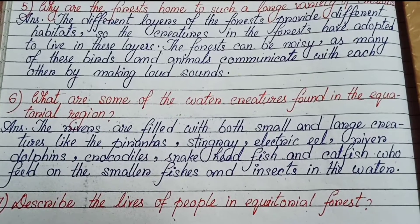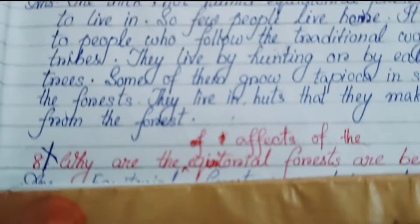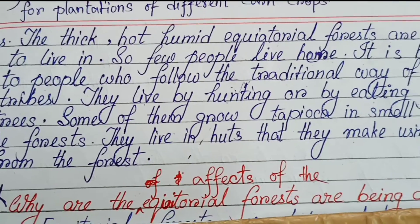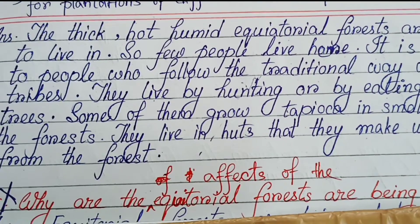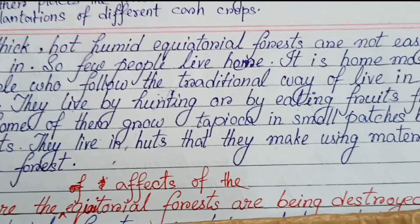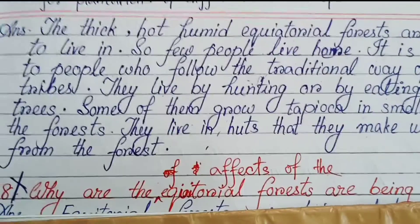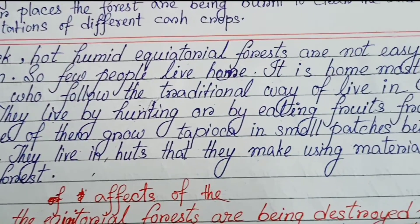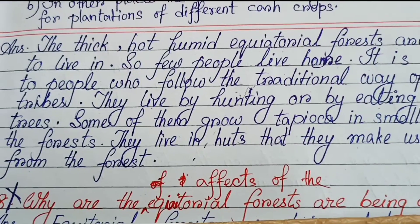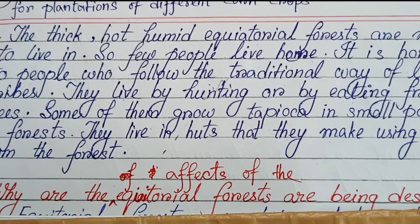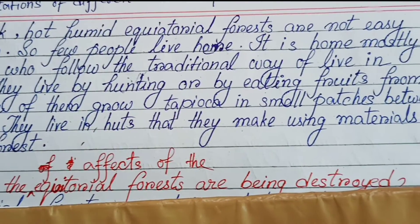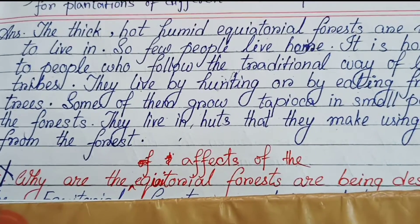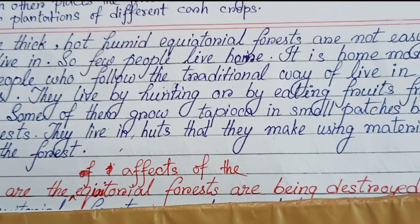Number 7: Describe the lives of people in equatorial forests. The thick, hot, humid equatorial forests are not easy to live in, so few people live here. It is home mostly to people who follow the traditional way of life in tribes. They live by hunting or by eating fruits from trees.